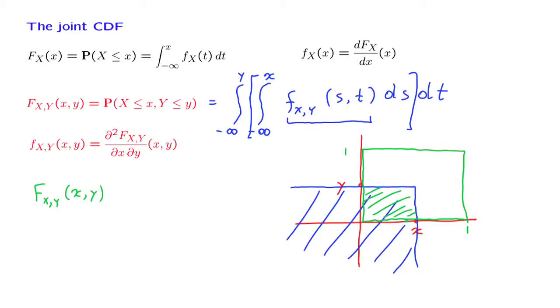With a uniform joint PDF, which is equal to 1, the probability is just the area of the set that we're considering. And since this set that we're considering is a rectangle with sizes x and y,